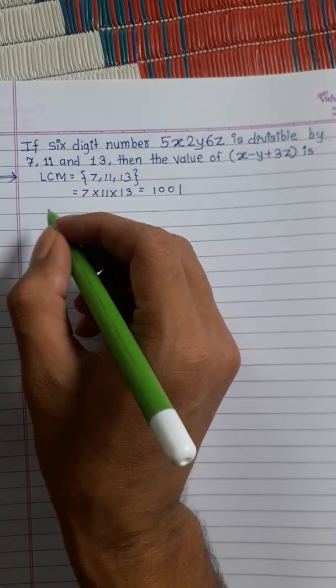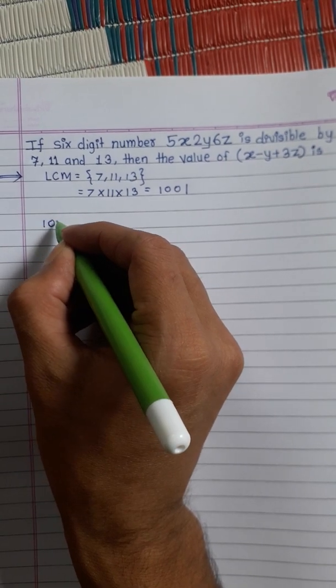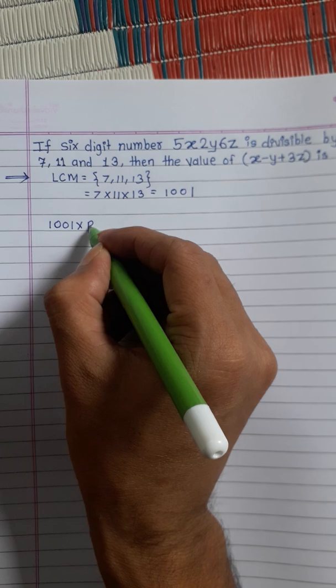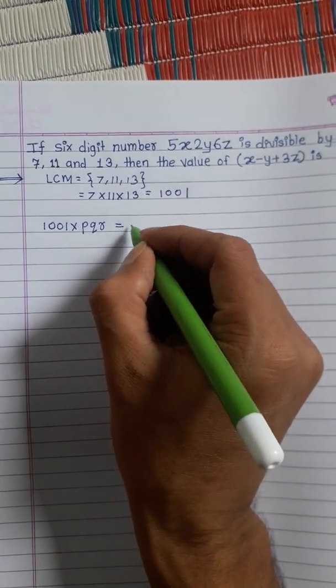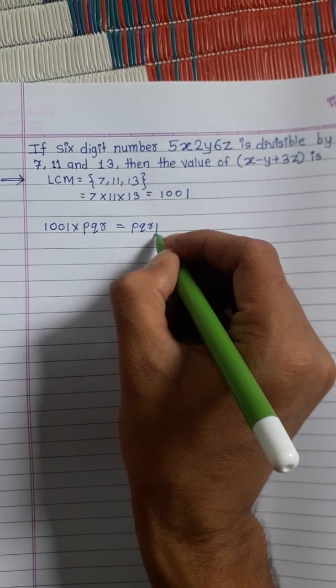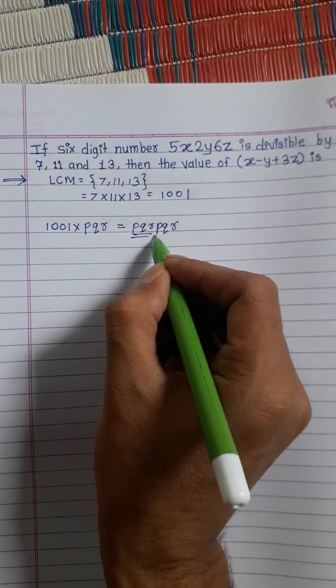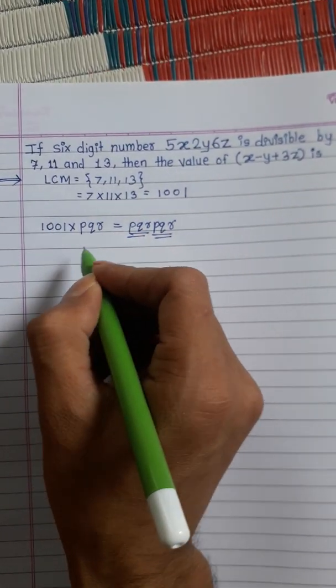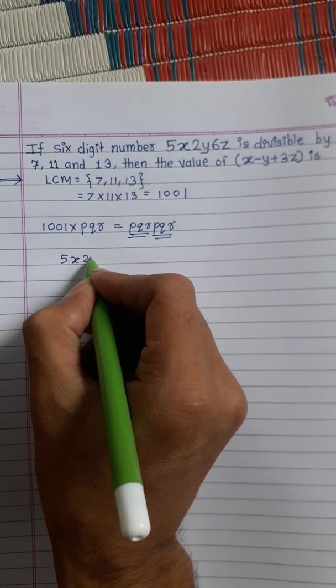As we know, when 1001 is multiplied by any number, suppose PQR, then we will get PQRPQR - the pattern PQR repeats itself.